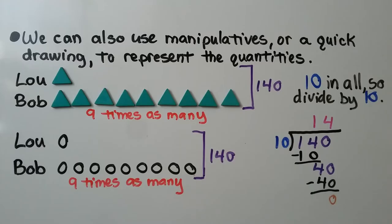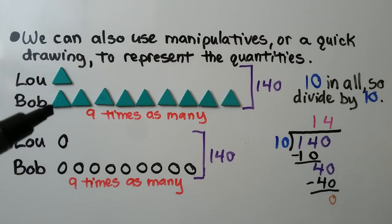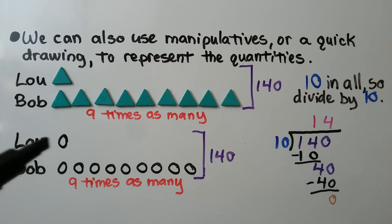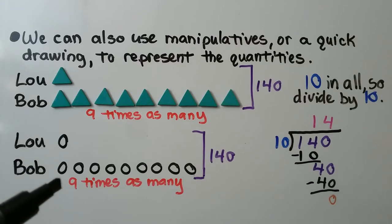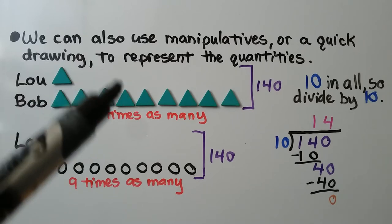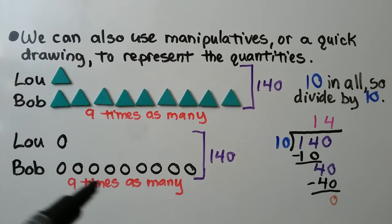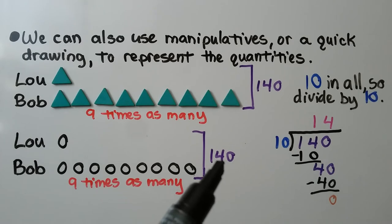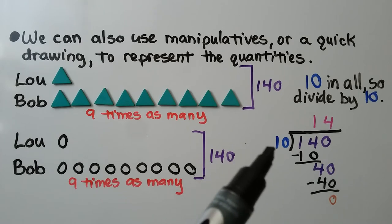We can also use manipulatives or a quick drawing to represent the quantities. We can give one counter for Lou and nine counters for Bob, because he has nine times as many. We can draw a circle for Lou and nine circles for Bob — that's 10 counters or 10 circles in all. So we're going to divide 140 by 10.